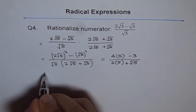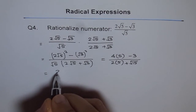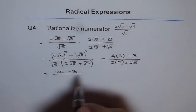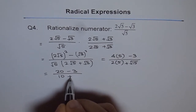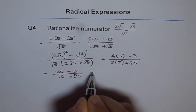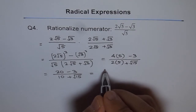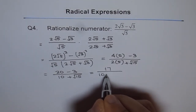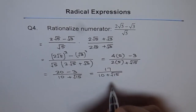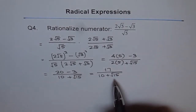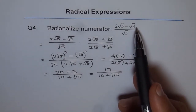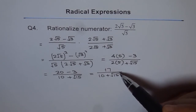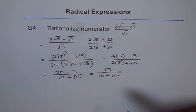So this gives us 4 times 5 is 20, minus 3, divided by 2 times 5 is 10, plus square root of 15. Which simplifies to 17 divided by 10 plus square root of 15. That is the final answer after rationalizing the numerator — there are no radicals remaining in the numerator. Thank you.